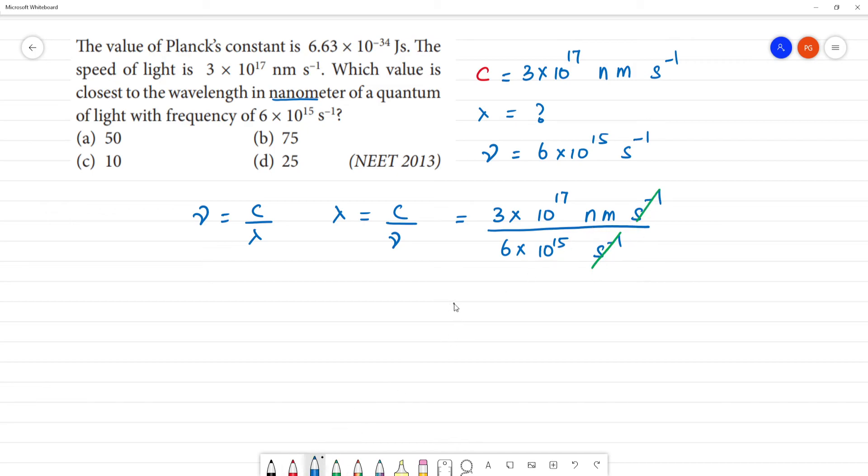Nanometer is equal to nanometer. So we can say 3 by 2, 1 by 2 is 0.5. Now 10 to the power 17 into 10 to the power 15 minus 15, so 0.5 into 10 square.